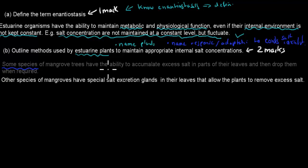Some species of mangrove trees have the ability to accumulate excess salt in parts of their leaves, and then drop them when required. These were the ones that if they absorb too much salt, which they often do, they'll just store it in a leaf, and when it's old, they'll just drop it in no problem at all.